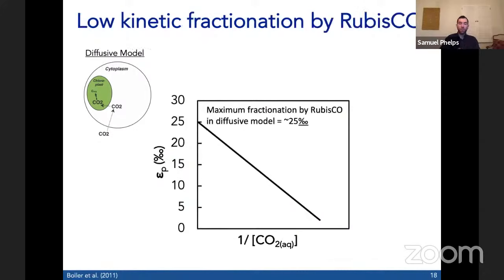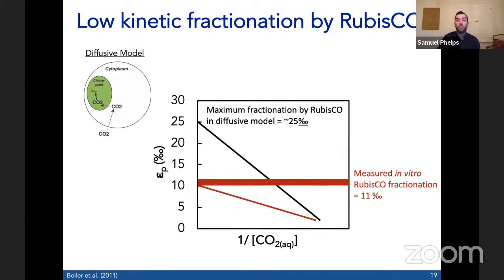There's another interesting piece of information that builds on this. In this model, the maximum fractionation is 25 per mil at infinite CO2, where rubisco should be fully expressed. If you measure rubisco from a spinach leaf or tobacco leaf in vitro, you can measure a value of 25 per mil. Some early experiments projected an intercept up to 25 per mil. But in recent years, the rubisco fractionation from Emiliania Huxleyi was measured in vitro, and the value returned was 11 per mil. This requires a different explanation to achieve EP values greater than 11 per mil if the actual kinetic fractionation by the enzyme is only 11 per mil.